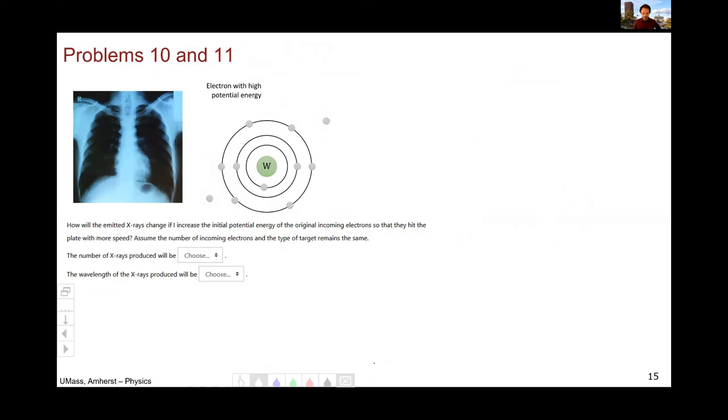So for 10 and 11, I'm going to talk about these together because they are kind of a pair. So if I change the initial potential energy of my initial electron, the incoming electron that kicks out the inner shell electron, what is going to happen? Well, one electron kicks out one incoming electron kicks out one inner shell electron, which then an outer shell electron falls in and I get one photon out. So increasing the energy of this incoming electron doesn't change squat. So everything stays the same in both cases here because the energy of the X-ray that comes out is given by this transition from the outer shell to the inner shell, which is unaffected by the energy of the incoming electron.